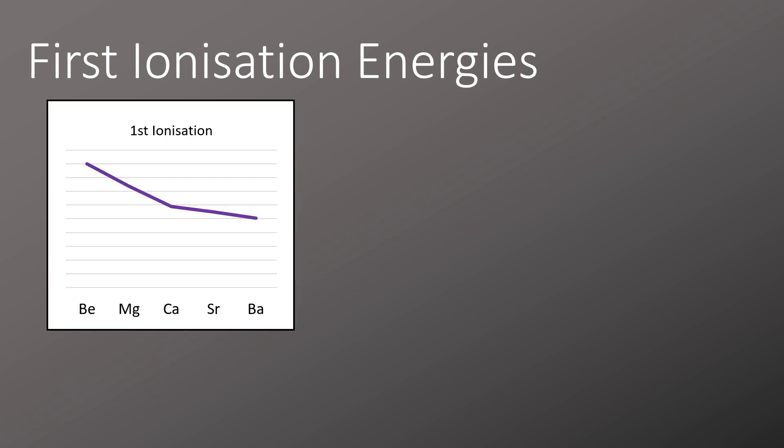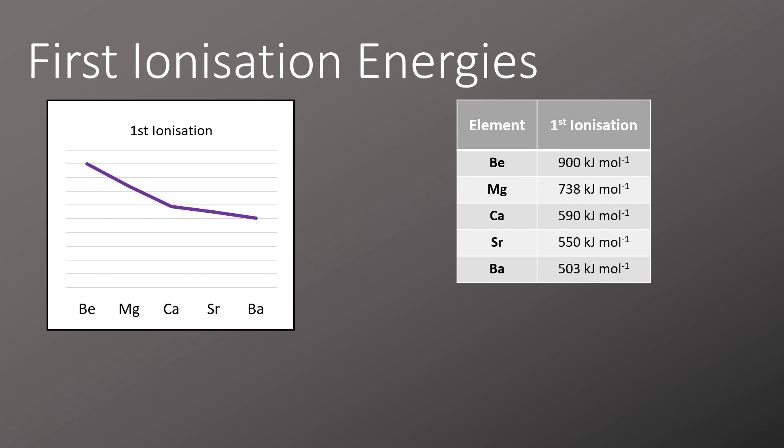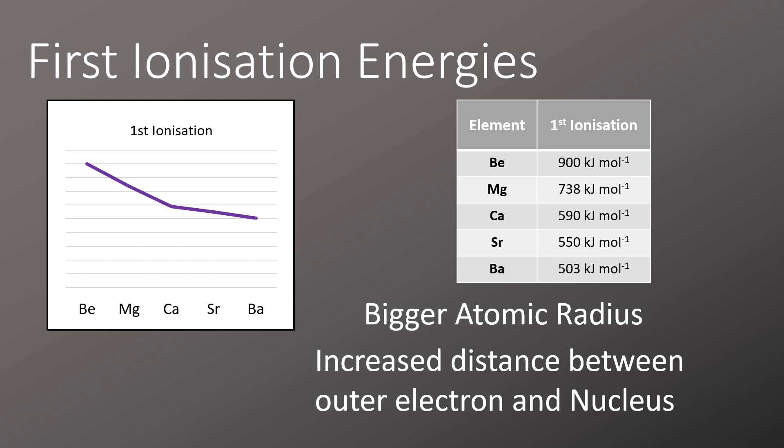This links directly into first ionization energies. As we go down the group, the first ionization energies decrease, starting with beryllium at 900 kilojoules per mole and decreasing down towards barium at 503 kilojoules per mole. This happens mostly because there's a bigger atomic radius, leading to increased distance between the outer electrons and the nucleus, so less energy is needed to overcome the attraction between them.